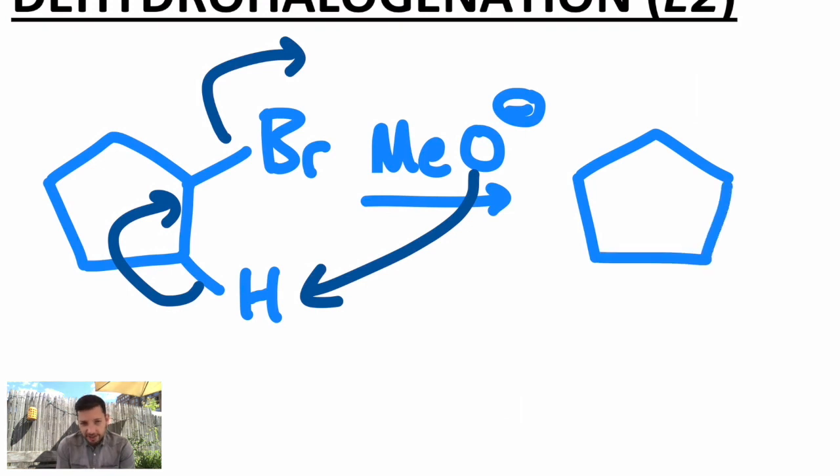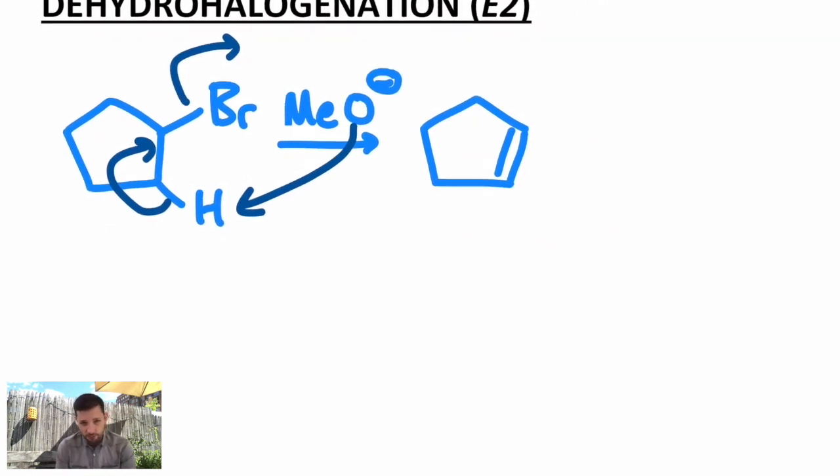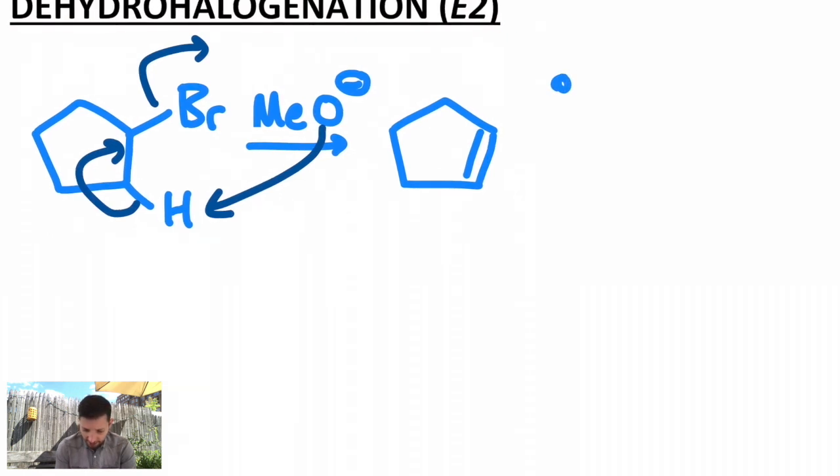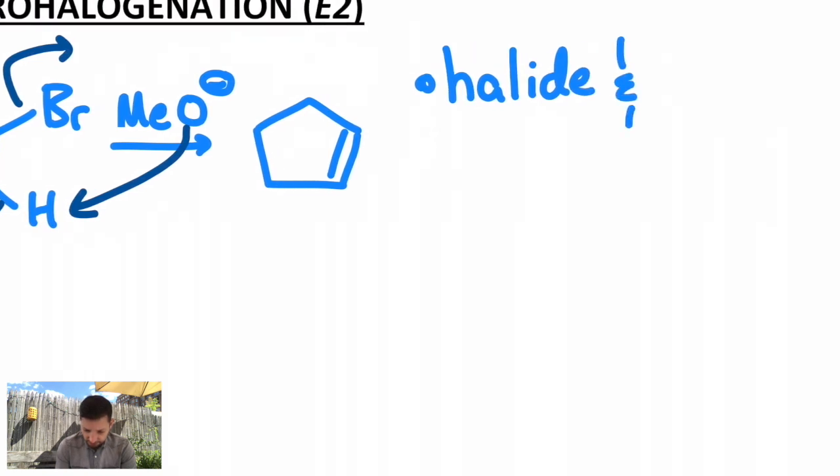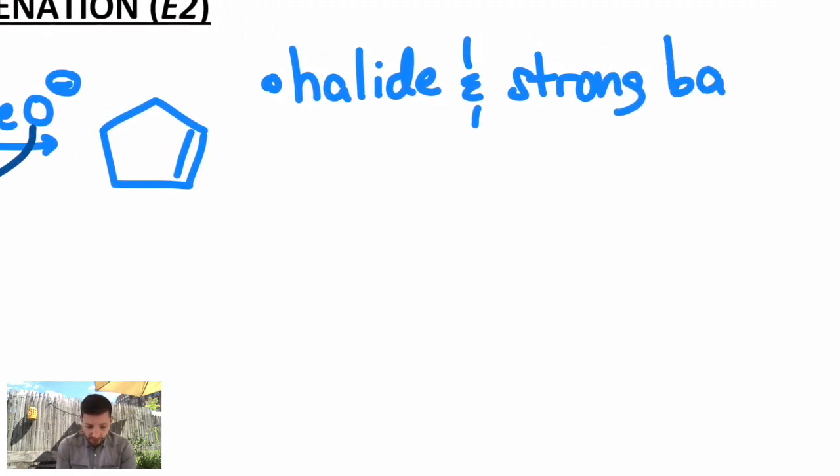And I'm just going to list the key features of the E2 reaction that you should definitely be familiar with. Writing that one example should highlight a number of things. Number one, what we're using, a halide and a strong base. Number two, this is concerted, the E2 is concerted, it happens all in one step. There's no intermediates to draw.